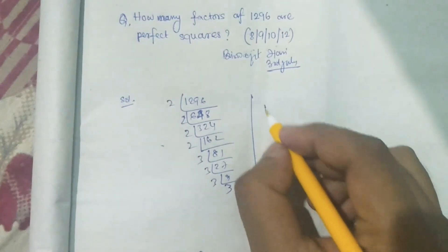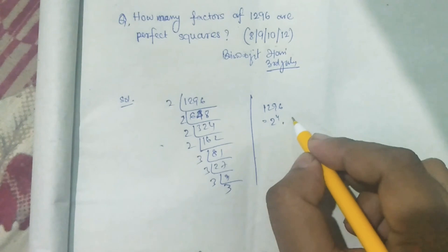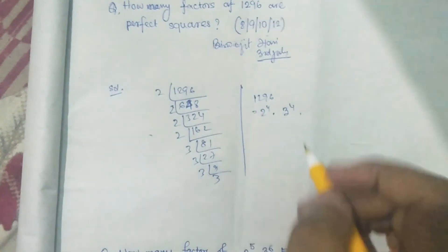So, we find that 2 to the power 4, 3 to the power 4, ok?